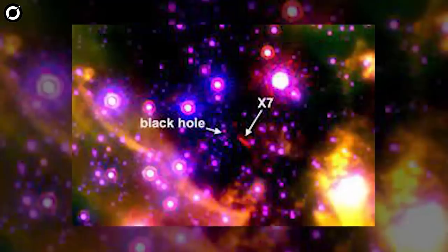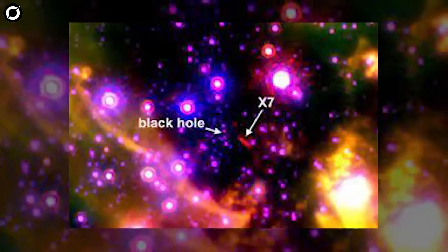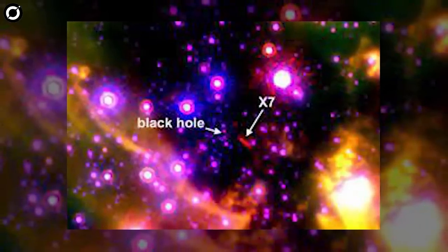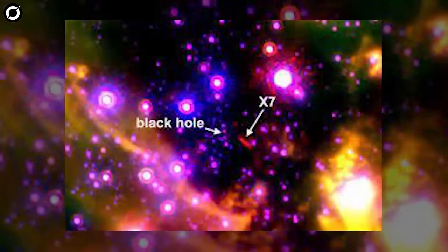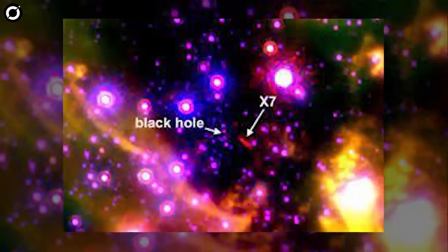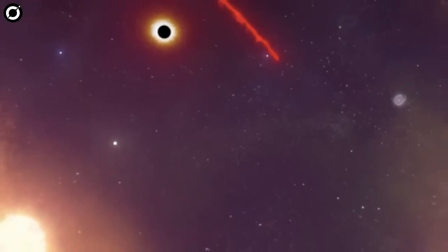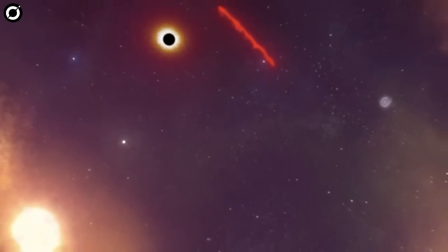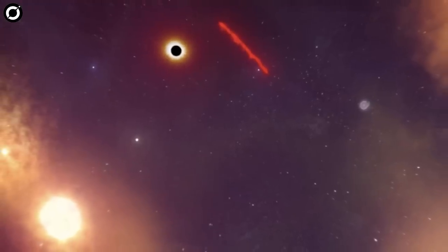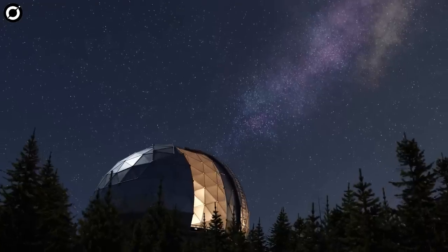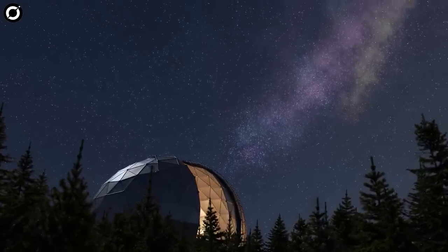As detailed in a recent paper published in the Astrophysical Journal, astronomers have found that X7 now stretches 3000 astronomical units, or 3000 times the distance between the sun and us, and we're still not entirely sure where it even came from.